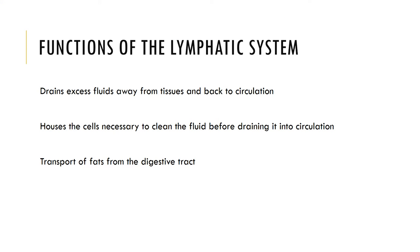There are three important functions to the lymphatic system and immunity. The lymphatic system drains excess interstitial fluid from the interstitial space and transports it to the bloodstream. Once this tissue fluid enters lymphatic vessels, it is no longer called interstitial fluid but is now referred to as lymph. Any blockage in the normal drainage of lymph produces edema. The lymphatic system also houses phagocytic cells and lymphocytes that clean the tissue fluid before it is dumped into circulation, and it absorbs digested fats from the intestine via specialized lymph vessels called lacteals. The fatty lymph is known as chyle.